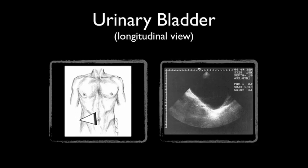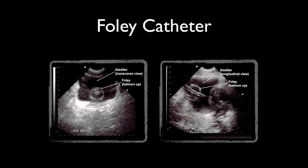This is the longitudinal, or sagittal, view of the urinary bladder. It appears triangular in shape. Make sure the indicator marker on the probe is toward the patient's head. Confirming the position of the Foley catheter is easy. In the longitudinal and transverse view, one can appreciate the Foley catheter and its balloon apparatus within the bladder.